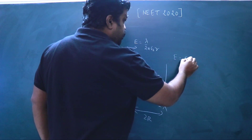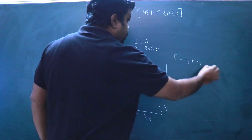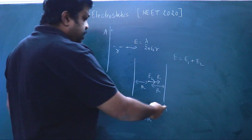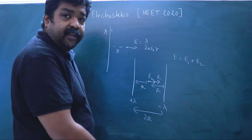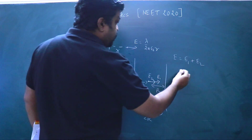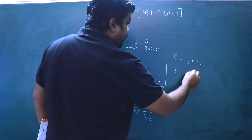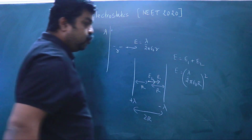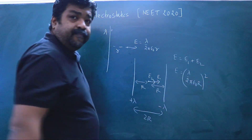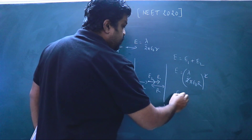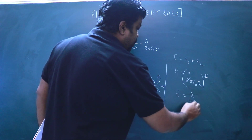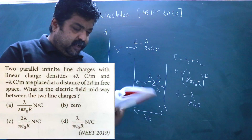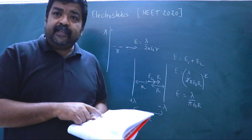The resultant field E equals E1 plus E2. Since λ differs only by sign and the distance r is the same for both, E1 and E2 have the same magnitude. So E = (λ / 2πε₀r) × 2, and the factor of 2 cancels, giving E = λ / (πε₀r). From the given options, option D is the correct answer.